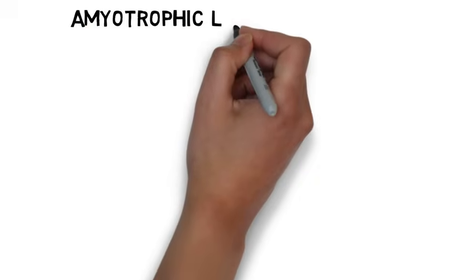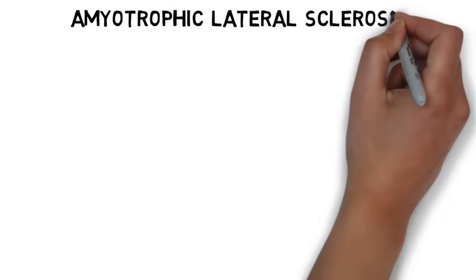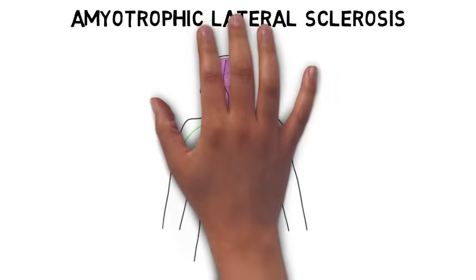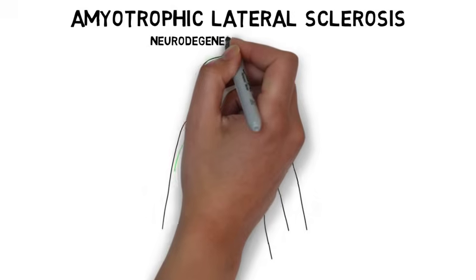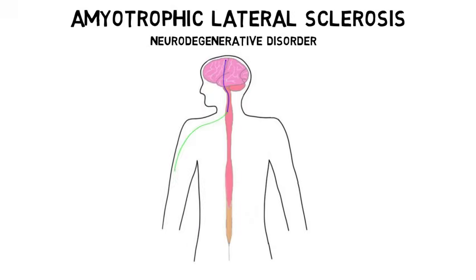Although some cases of ALS are inherited, in the vast majority of cases the cause of ALS is unknown. ALS is a neurodegenerative disorder, meaning it is characterized by the degeneration and death of neurons.